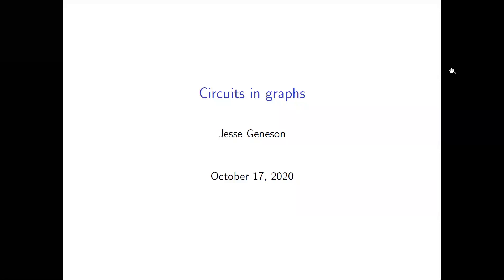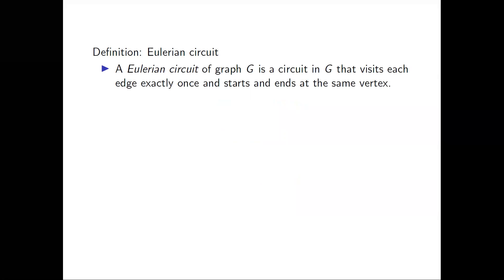Welcome back. In this video we're going to discuss circuits and graphs, in particular Eulerian circuits and Hamiltonian circuits. We're going to start with Eulerian circuits. The definition of an Eulerian circuit in a graph G is a circuit that visits each edge exactly once and starts and ends at the same vertex.